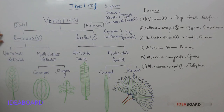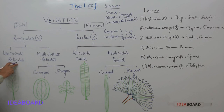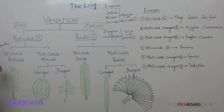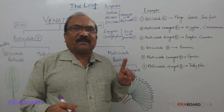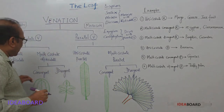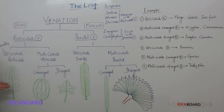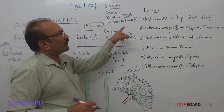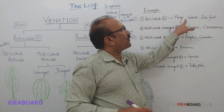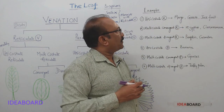Reticulate venation, based on the number of midribs, is of two types. First is unicostate reticulate venation, also called pinnately reticulate venation. 'Uni' means one, 'costa' means midrib — so when there is a single midrib producing lateral veins, sub-lateral veins, and veinlets that fuse into a net-like arrangement, it is called unicostate reticulate venation. Examples are mango, guava, and jackfruit.